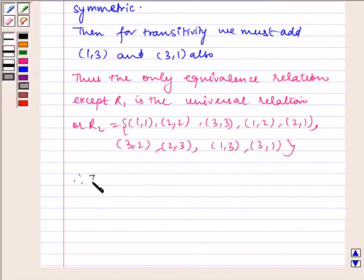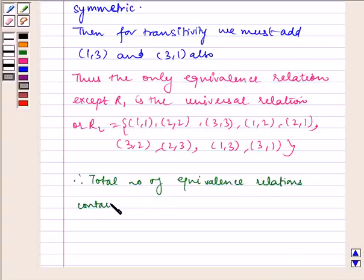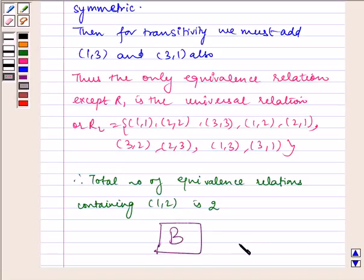Therefore, the total number of equivalence relations containing (1, 2) is 2. The required answer is B. I hope you answered the problem. Bye and have a nice day.